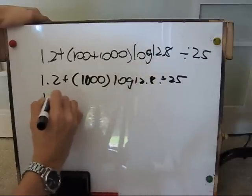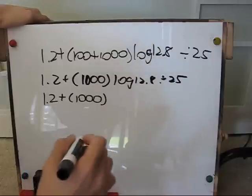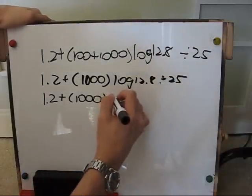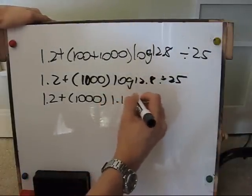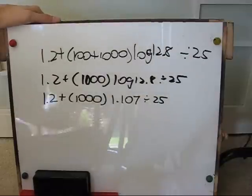And then the next thing you need to simplify out is the log 12.8 because it's an exponential function. And since you have three significant figures, there will be three digits to the right of the decimal place. So this rounds to 1.107.